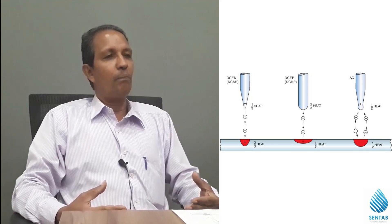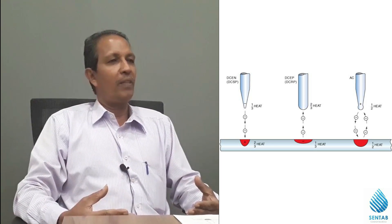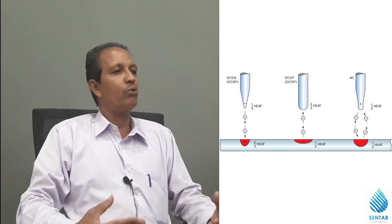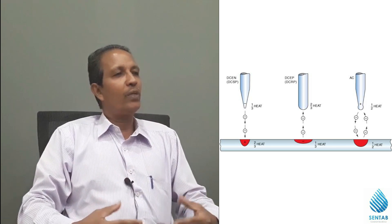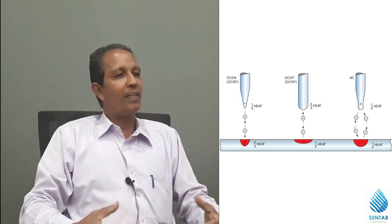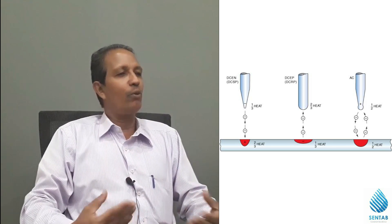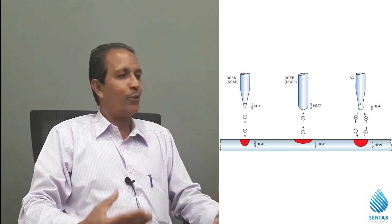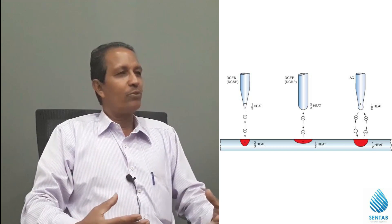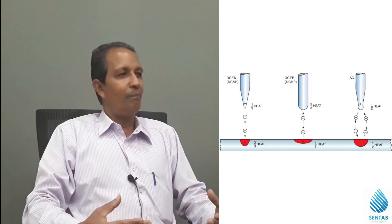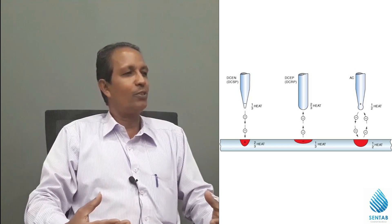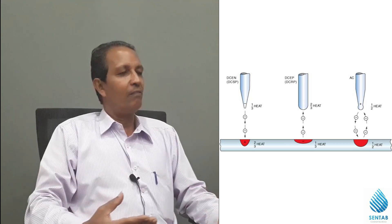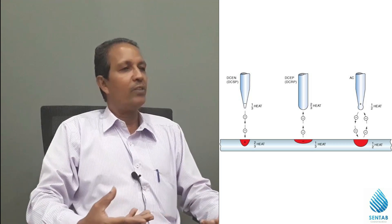It's called the positive path and the negative path. If you see the negative path, you can see the negative path. When we are in the centre of building DCEN and DCEP polarity matters.